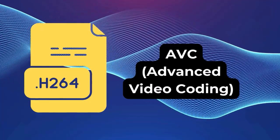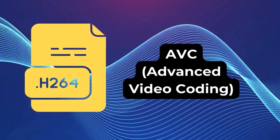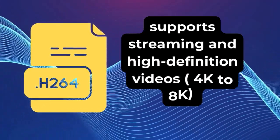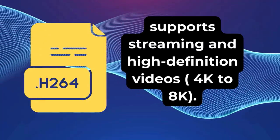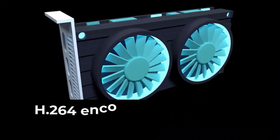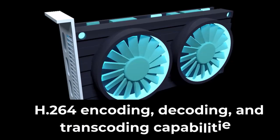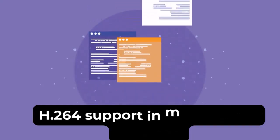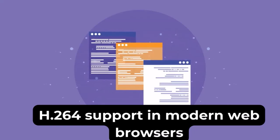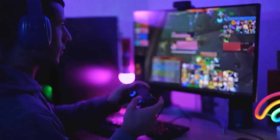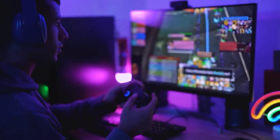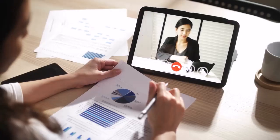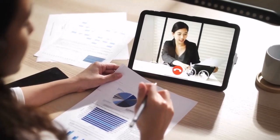However, industry circles call it H.264 to differentiate it. H.264 is a versatile codec that supports both streaming and high-definition videos, ranging from 4K to 8K. Most video cards have H.264 encoding, decoding, and transcoding capabilities. Web browsers also offer support for the H.264 codec. H.264 is widely used in Blu-ray discs, online streaming services like YouTube and Netflix, and digital television broadcasting. It's also popular for video conferencing and recording.